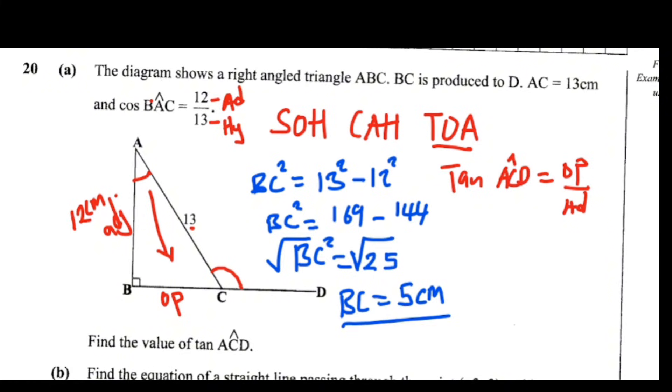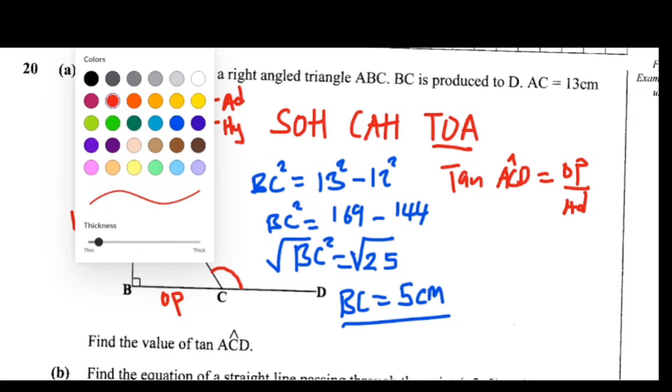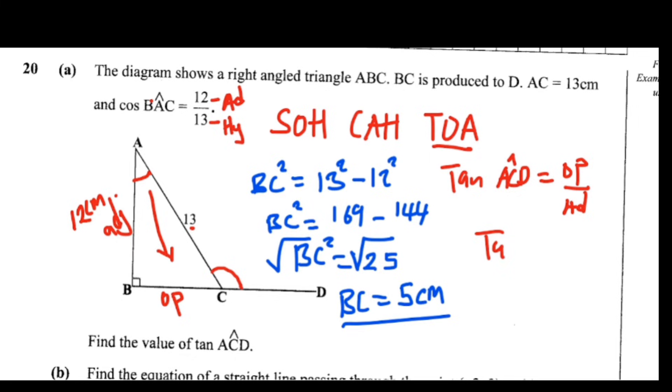So it means that the opposite there was 5 centimeter. Now let's go back to our calculations. That side, we complete them. So here we are going to say now, tan ACD, opposite we have said is 5, over, what is our adjacent? So according to the equation, the adjacent is 12.